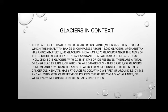Glaciers in context: there are an estimated 160,000 glaciers on Earth, of which the Himalayan region encompasses about 15,000 glaciers. Afghanistan has approximately 3,000 glaciers. India has 9,575 glaciers under the Geological Society of India. Pakistan's glaciated area is 15,000 km² including 5,218 glaciers with 2,738 km³ of ice reserves, and a total of 2,420 glacier lakes of which 52 are dangerous.